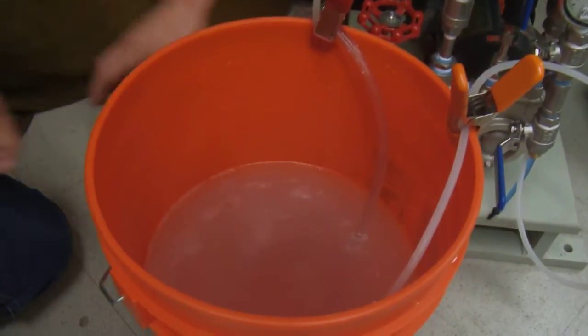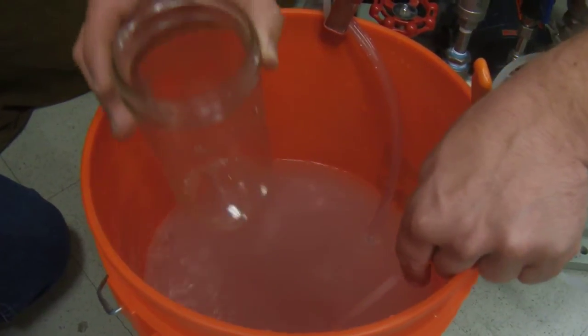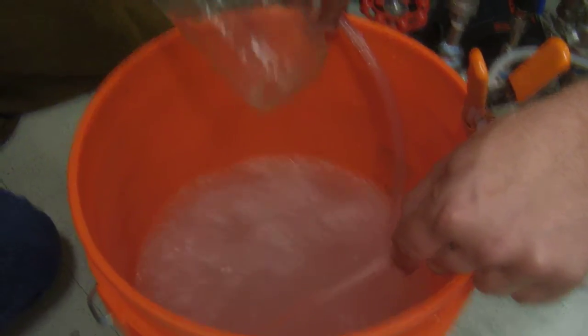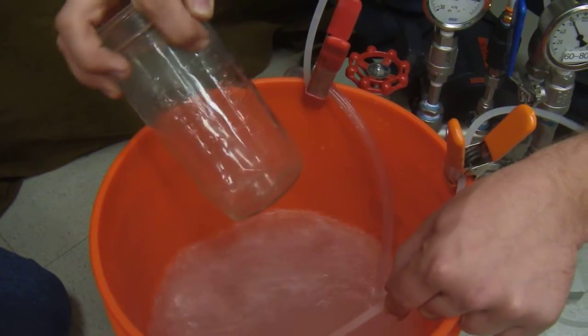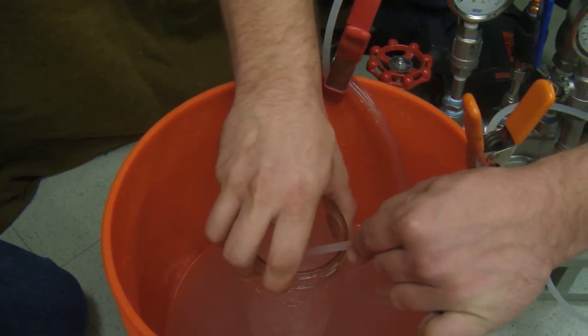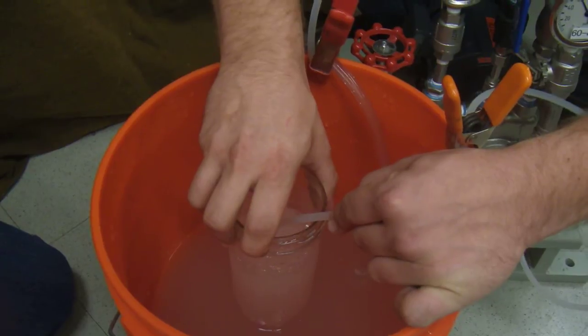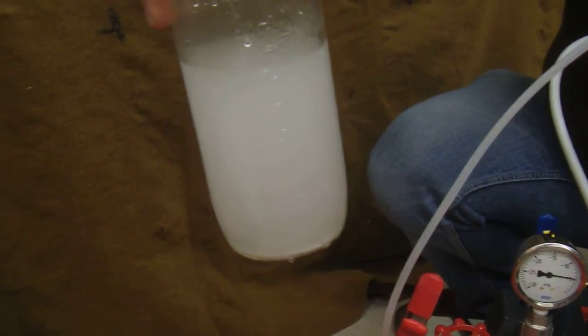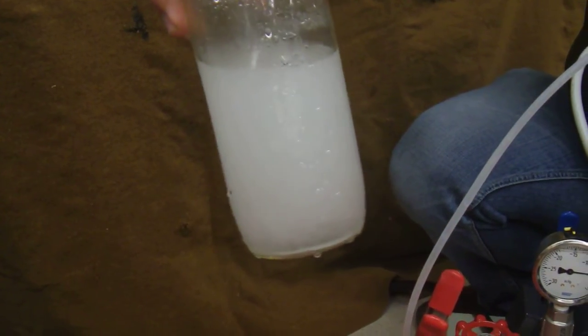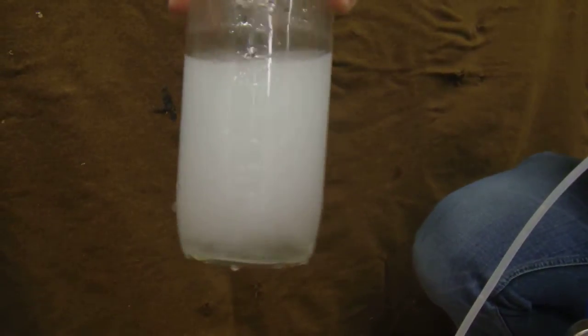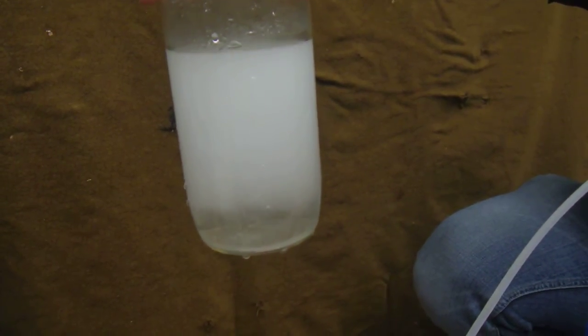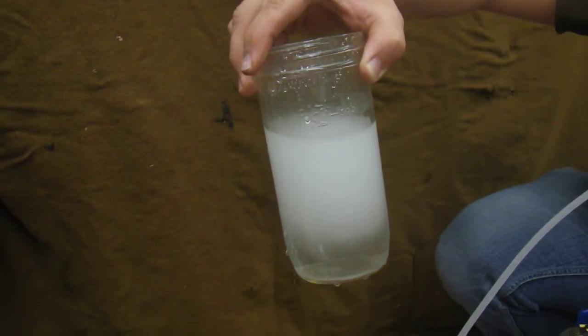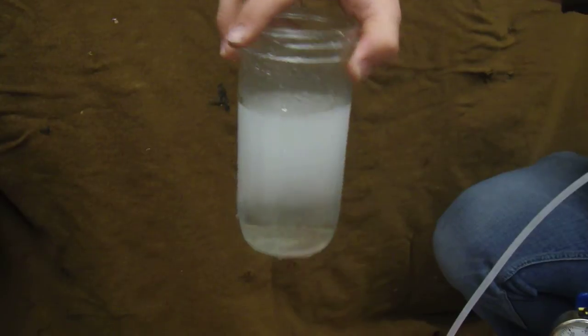So you can see the water is becoming filled with microbubbles. And just to give it a demonstration of what the microbubbles look like, this is a jar with, this is two cups. So these are the microbubbles and they persist in the solution. And slowly they'll begin to dissipate.